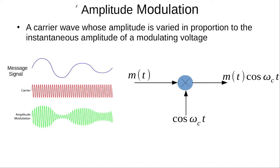As an example of modulation, we have amplitude modulation. Suppose this is a message signal and this is a carrier signal. This carrier signal is a cosine wave that has a certain frequency omega_c. Now if we multiply the message signal with the carrier wave, we get this signal, which we call the amplitude modulated signal.